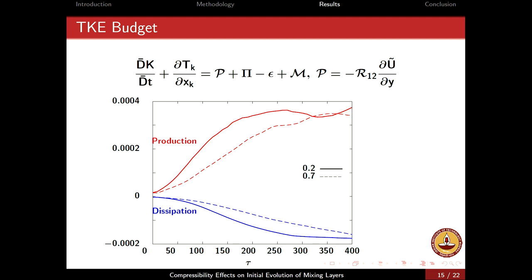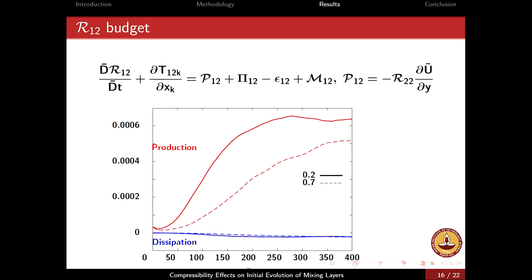What causes this reduction in production? Looking at the production term, with no other mean flow gradients present, only one term contributes. Our simulations show that mean flow gradients are roughly comparable for incompressible and compressible cases. So it is actually the Reynolds stress R12 (the UV stress) which is contributing to the production. Looking at the R12 budget — with production, dissipation, pressure dilatation, and mass flux terms — again the latter two are negligible, and it is reduction in production that gives lower R12 values. The production of R12 involves transverse fluctuations, so by the same argument it must be the lower levels of R22 (V-squared) which is responsible for the reduction in R12 production.